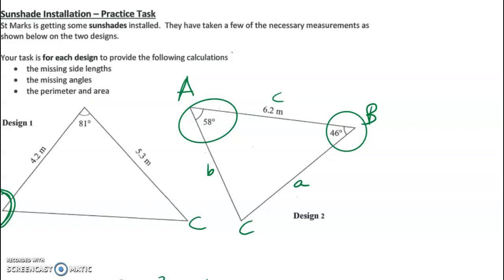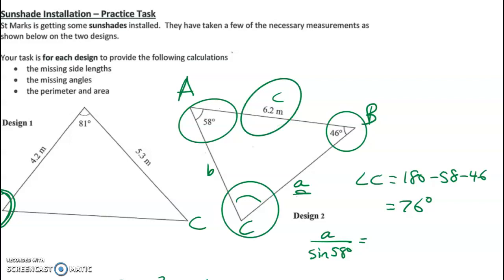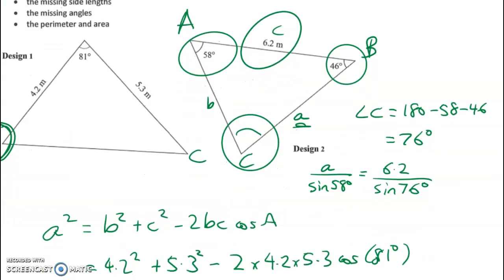What's angle C? Well angle C equals 180 minus 58 minus 46, which is 76 degrees. So a over sine 58 degrees equals - well we know this one and this one - equals 6.2 divided by sine 76 degrees. When you work that through, it's only a one-step rearranging, we get a equals 5.419 meters. So that's the first side length found.